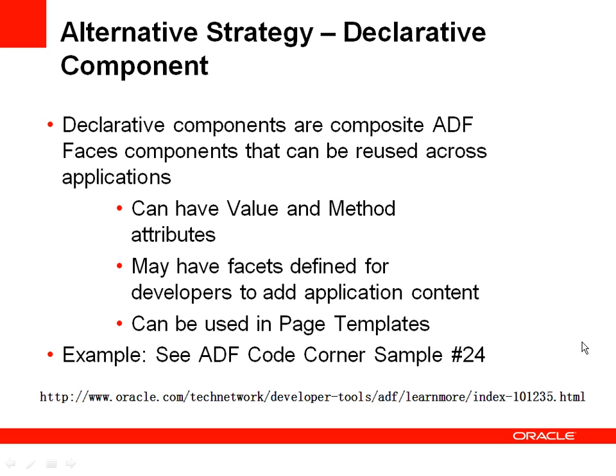An alternative strategy to using page templates is to use declarative components, because a toolbar area on a page that performs specific operations can also be expressed as a declarative component. Since declarative components support method attributes, they can directly publish the command action of a pressed button to the consuming application. An example showcasing this alternative strategy using a declarative component is published on ADF Code Corner as sample 24. You can find ADF Code Corner via oracle.com or by searching Google — scroll down and get the PDF document explaining the declarative component approach for the same use case.